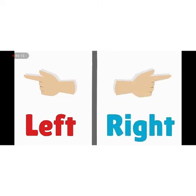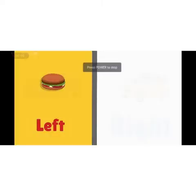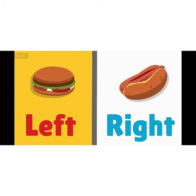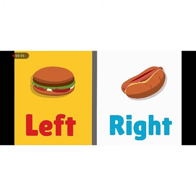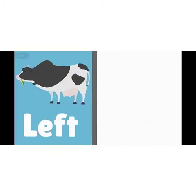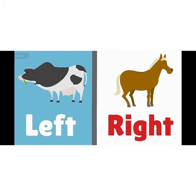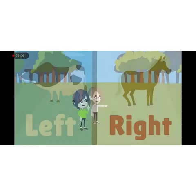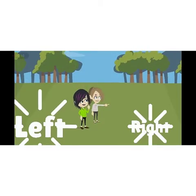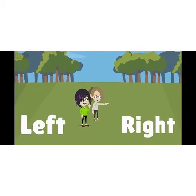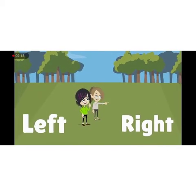Left, right, left, right. Cow is on the left side and horse on the right. Girl is pointing on the right and other on the left.